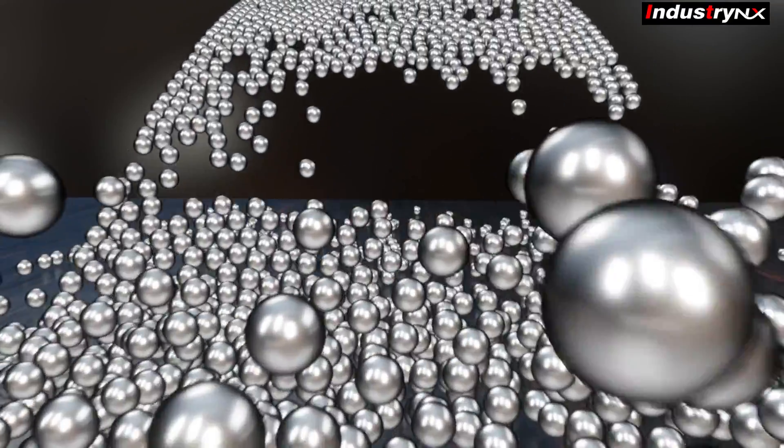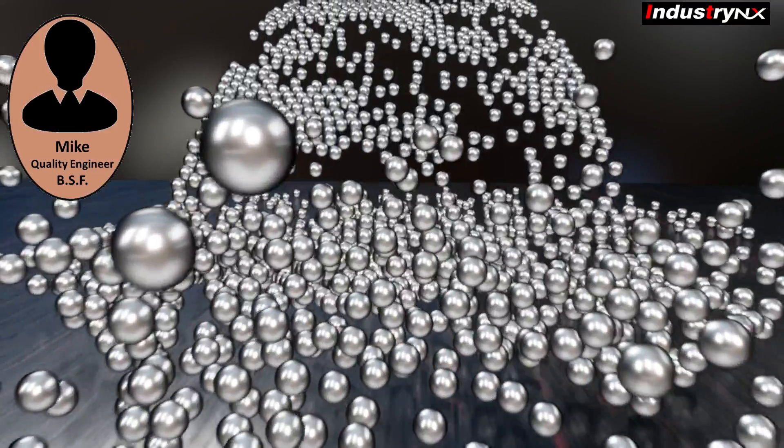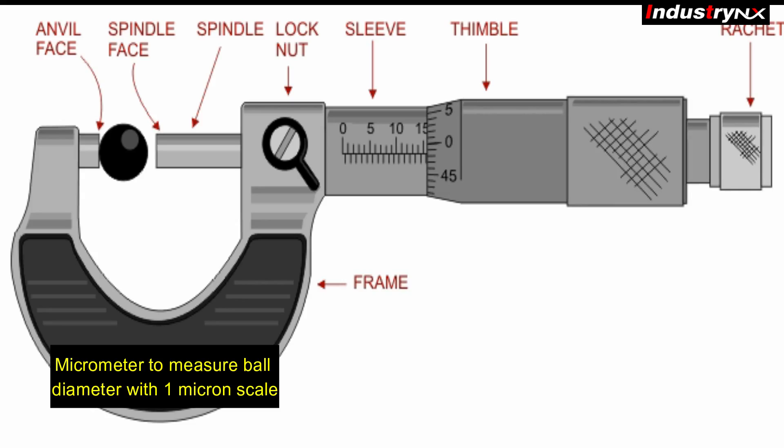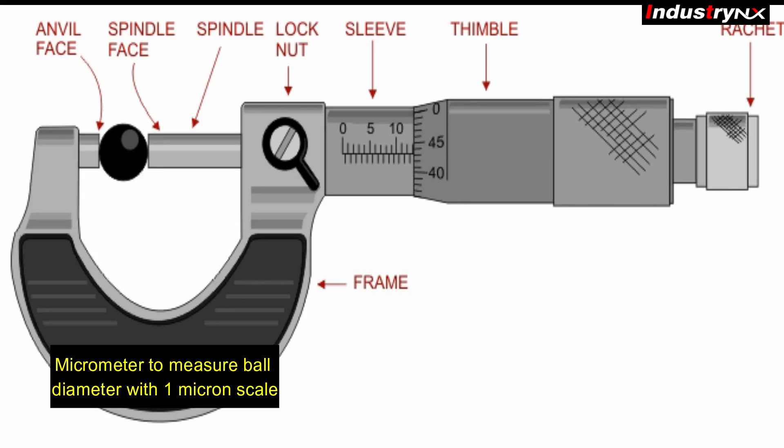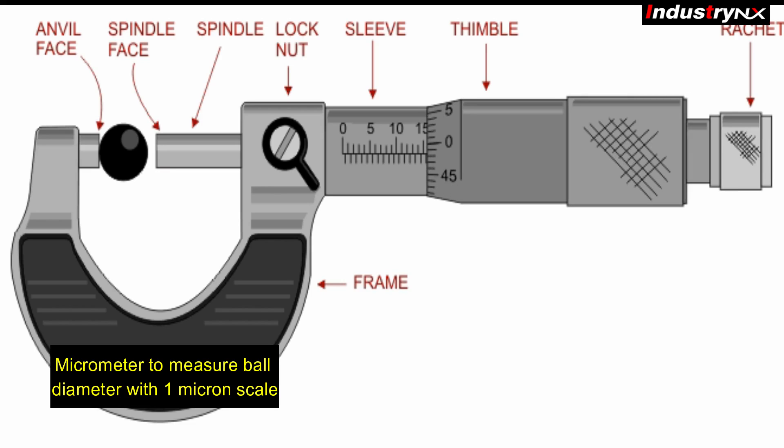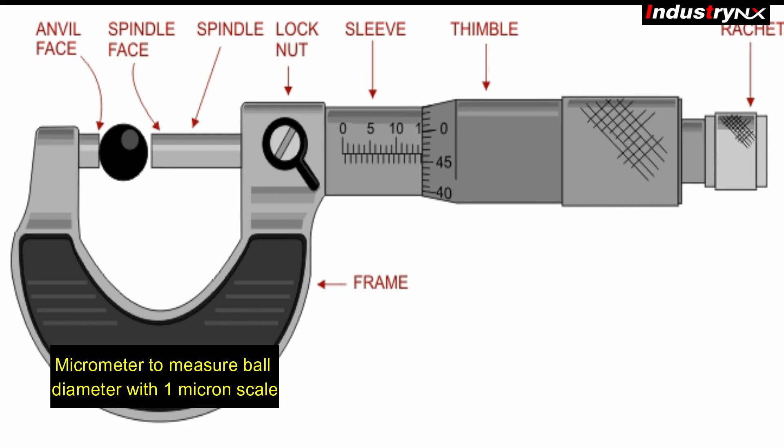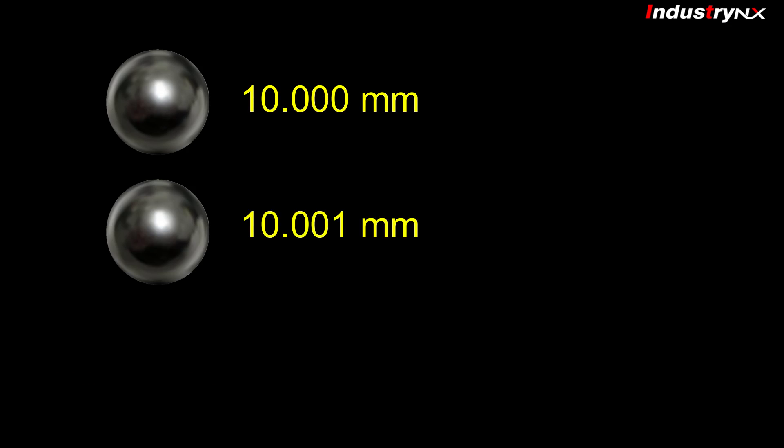BSF quality engineer Mike wanted to certify the batch before giving clearance for assembly operation. Conventionally, ball size is being measured with micrometer which has least count of 1 micron. That means we can sort balls with 1 micron incremental steps.